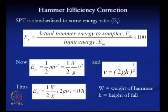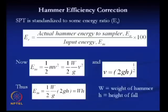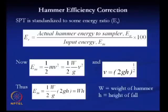When driving the split spoon sampler into the soil, some corrections are required. These corrections are basically of three types: one is for hammer efficiency correction, another is for overburden correction, and the next one is for drill rod length, borehole diameter, and sampler type. The SPT is standardized to some energy ratio.